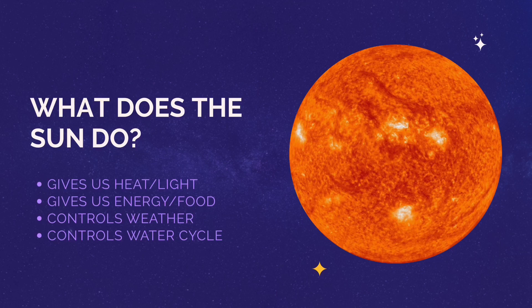Now let's talk about what the sun does, especially for humans. First of all, the sun is what gives us heat and light — sunlight. If you remember from when we learned about photosynthesis, sunlight is the food for plants, and in turn that gives humans energy. So the sun also gives us energy and food. Another thing most people know about the sun is that it controls weather — it changes the temperature, gives us sunny days, and also controls the water cycle because the sun is what evaporates the water.